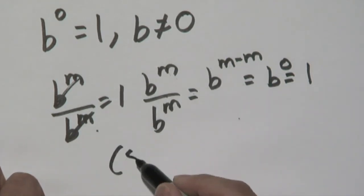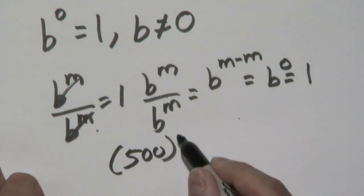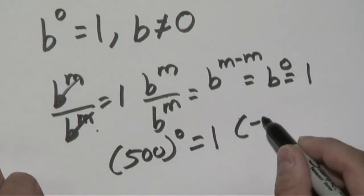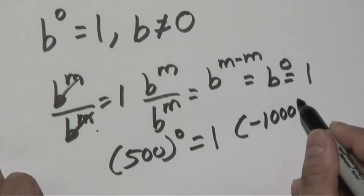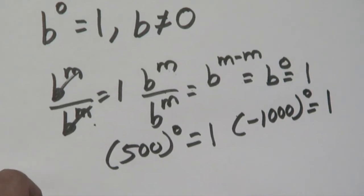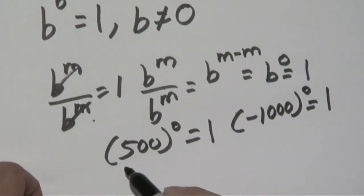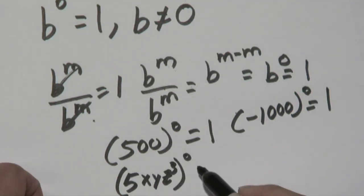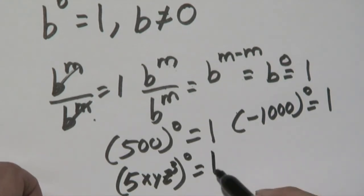So if you could have something like 500 to the zero power, that's going to be one. If you have negative 1,000 raised to the zero, that's also going to be one. You could have some really large term here, 5xyz to the third, all that to the zeroth power, that's going to give you one as well.